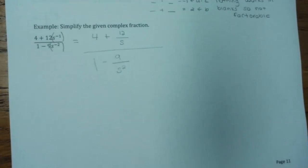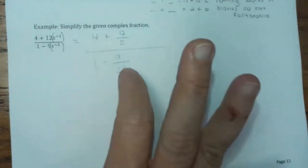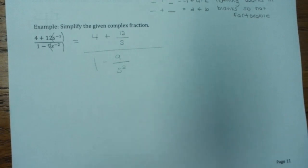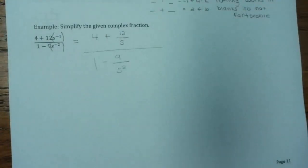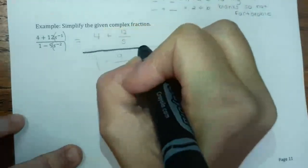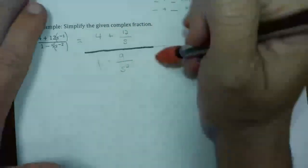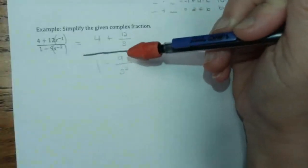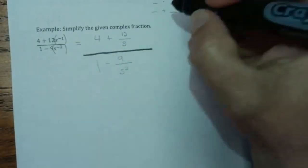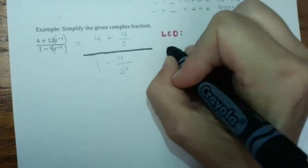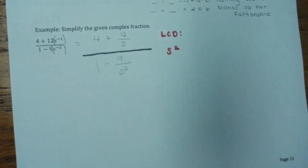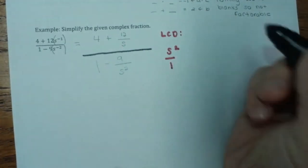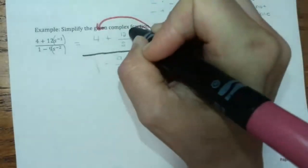Now it's just like the previous one — I can't do keep, change, flip because I have two separate fractions. So instead of combining into one fraction, let's multiply everything by the LCD. Looking at our denominators, they are s and s squared. If we give s two s's they would match, so our LCD is s squared.